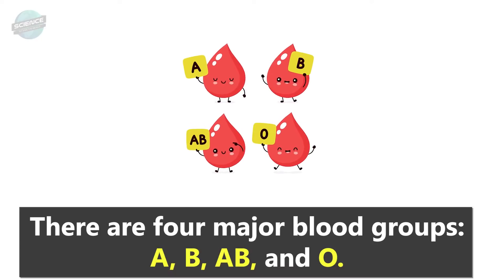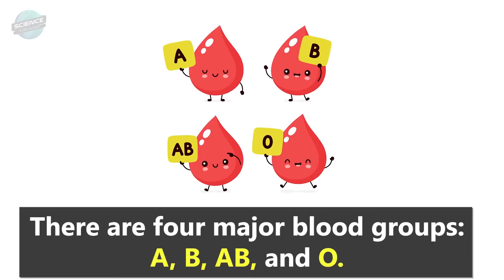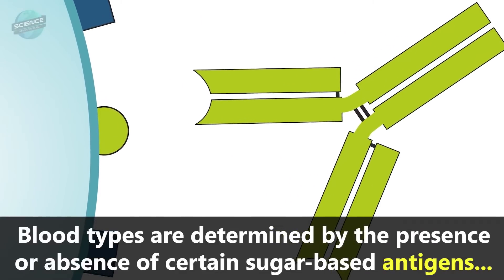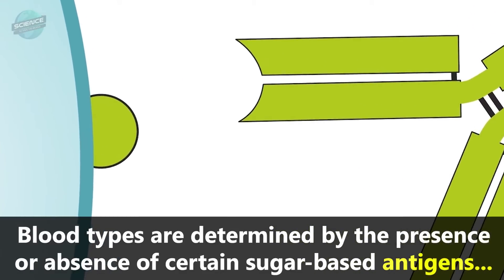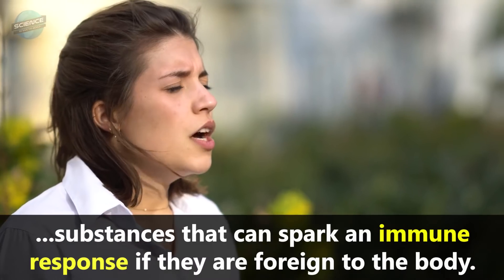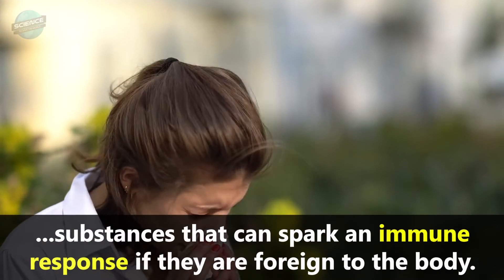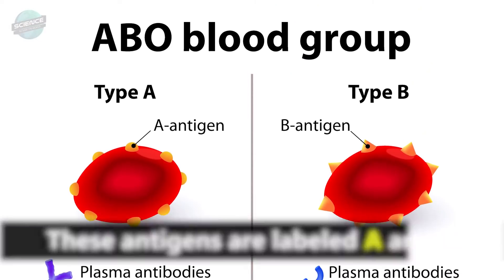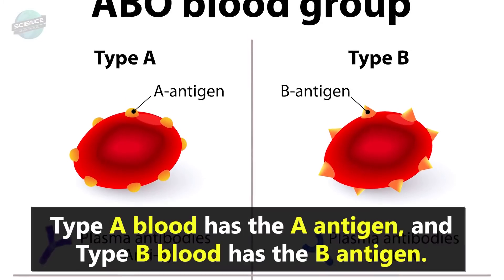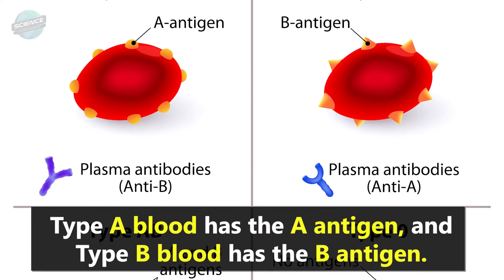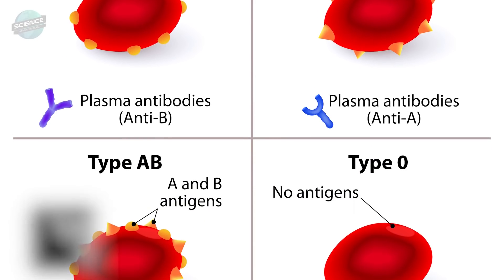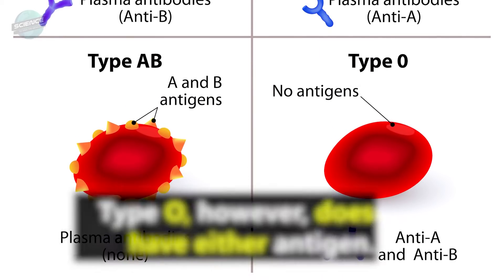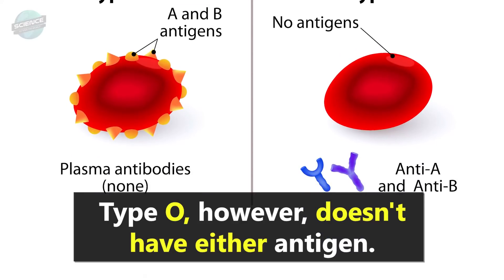There are four major blood groups: A, B, AB, and O. Blood types are determined by the presence or absence of certain sugar-based antigens, substances that can spark an immune response if they are foreign to the body. These antigens are labeled A and B. Type A blood has the A antigen, type B blood has the B antigen, type AB has both antigens, and type O doesn't have either antigen.